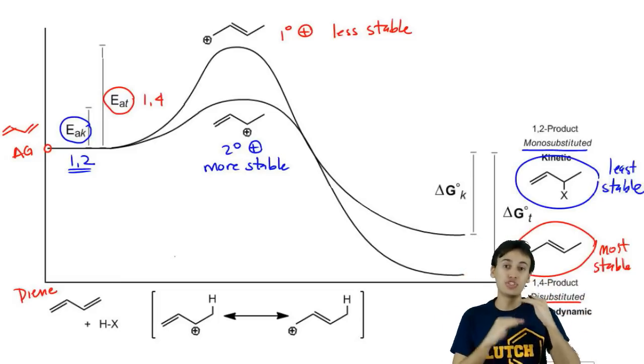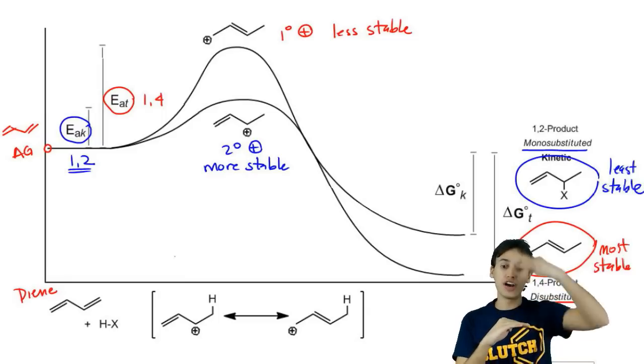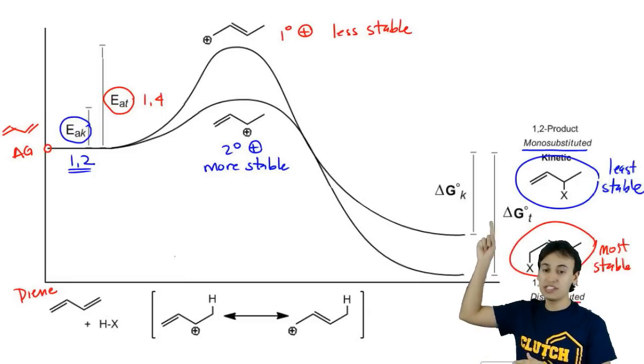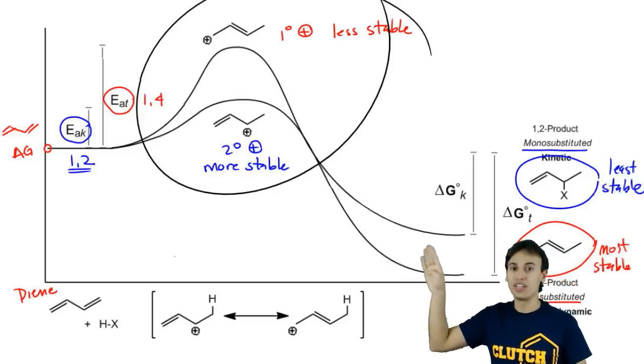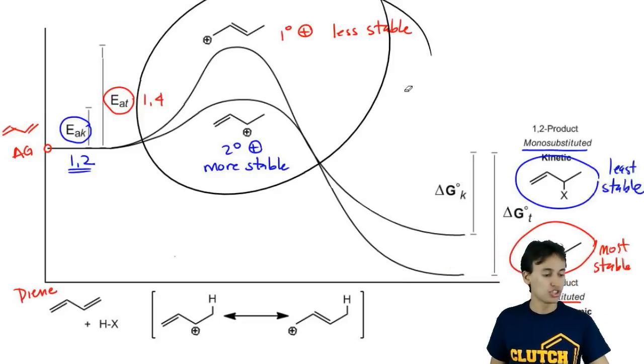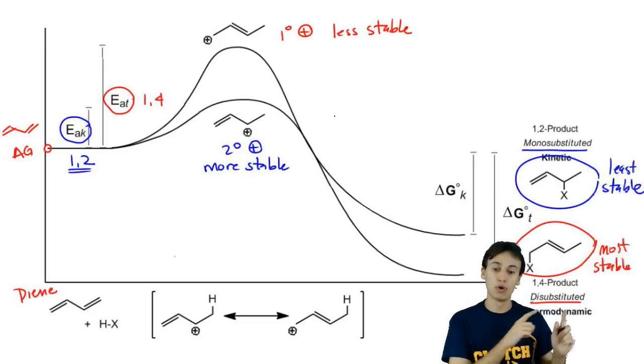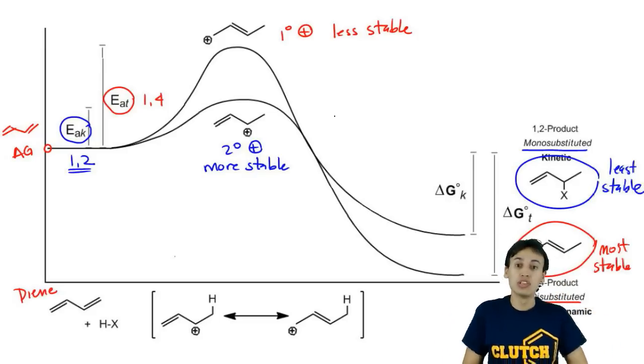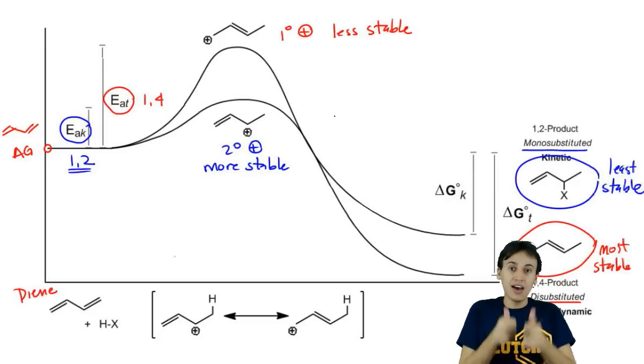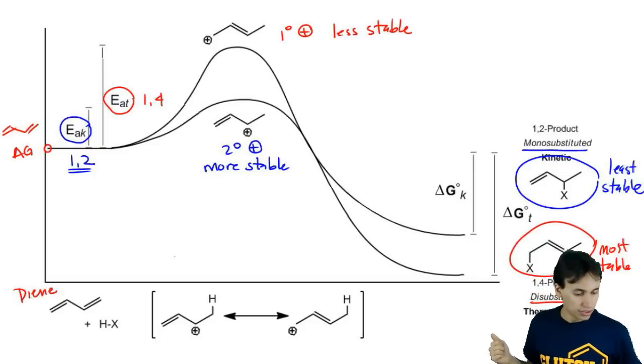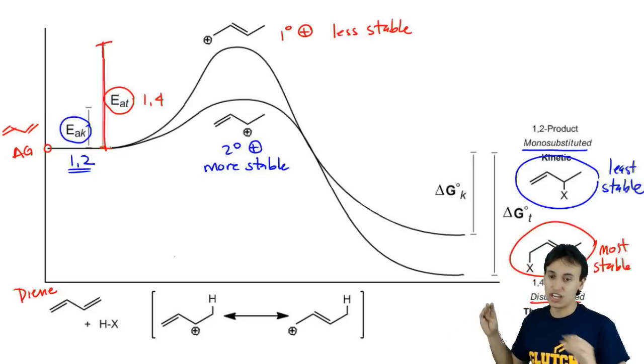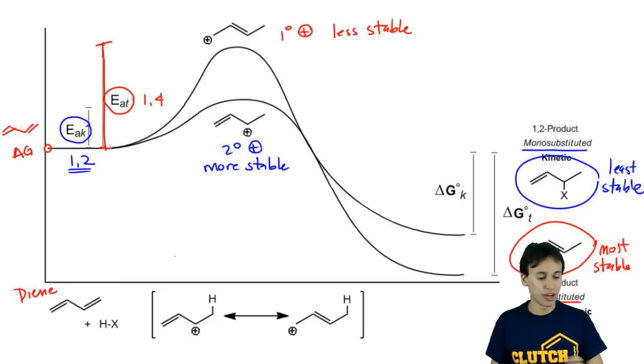However, if they don't have enough energy, they're not going to be able to overcome the very steep activation energy to become a thermodynamic 1,4 product. So if we want to favor the most stable product, we use lots of heat to jack up the energy of the reagents so that we can overcome this very high activation energy and make the most stable product.